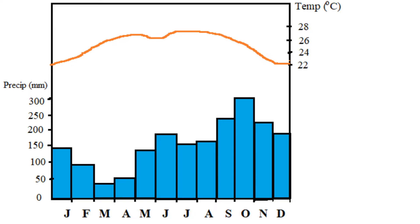The climate graph shows that from about December to March there is the drier season, with a smaller amount of rainfall. The rainfall during this season is partly the result of cold fronts. In the months of May to October there are higher amounts of rainfall when the Caribbean is under the influence of easterly waves, tropical storms, or even hurricanes.